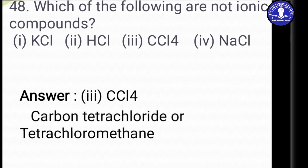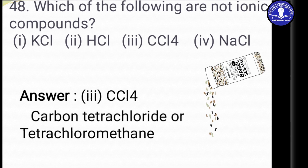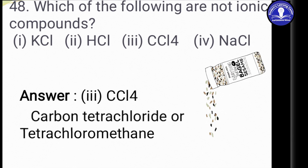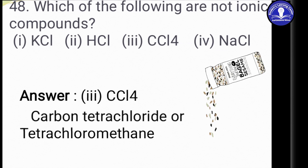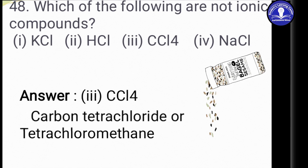In HCl we have H+ and Cl−, and in option 4, NaCl — sodium chloride, our common salt — we have Na+ and Cl−. In all these cases, positive and negative ions combine together. Sodium chloride has a peculiar property: in solid form it does not conduct electricity, but when dissolved in water it conducts electricity.